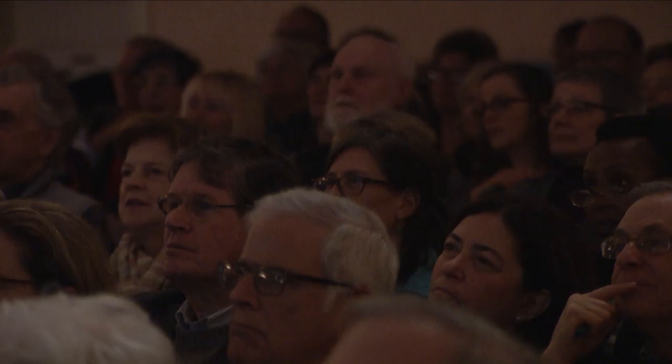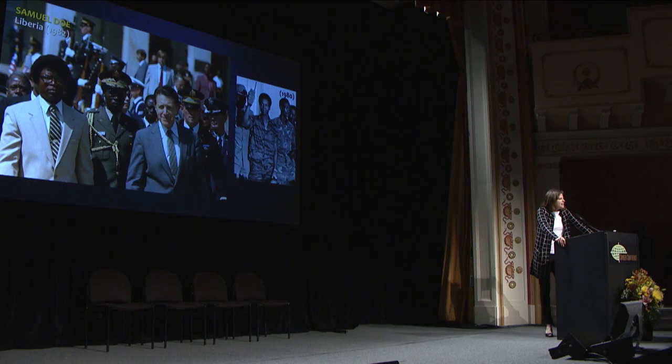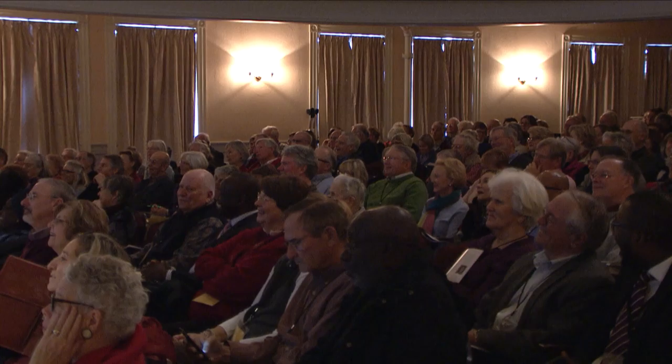This is Sam Doe, Staff Sergeant Sam Doe from Liberia. He was important to the United States because the U.S. had an important CIA listening post in Liberia. Sam Doe is renowned for lining up the ministers of the previous cabinet along the beach — there are horrific pictures — and shooting them all dead. He was a brutal, not very well-educated man, yet he was welcomed at the White House where Ronald Reagan warmly greeted him, mistakenly calling him 'Welcome, Chairman Moe.'